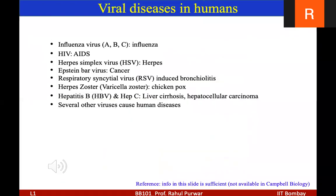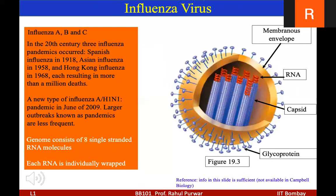Plants also get virally infected. More than 2,000 types of viral plant diseases are known. Common symptoms of viral infection include spots on leaves and fruits, stunted growth of the plant, and damaged flowers and roots. If you see mosaic patterns or discoloration on plants and fruits, those plants might be virally infected.